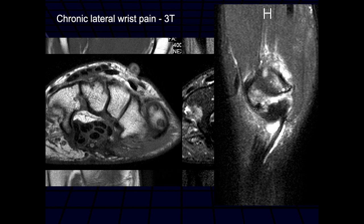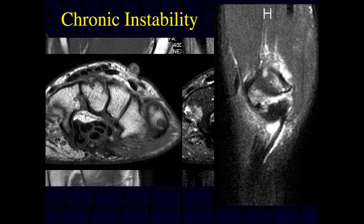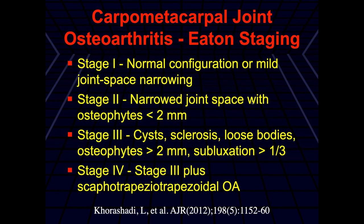Again, cyst formation and cortical irregularity. There is a staging of degenerative disease at this location: Stage 1 is basically normal configuration or mild joint space narrowing; Stage 2 is plain film narrowing with osteophytes less than two millimeters; Stage 3 has cysts, loose bodies, subluxation greater than one-third of the diameter of the base; Stage 4 is Stage 3 plus scapho-trapezoidal-trapezoid osteoarthrosis on plain films.